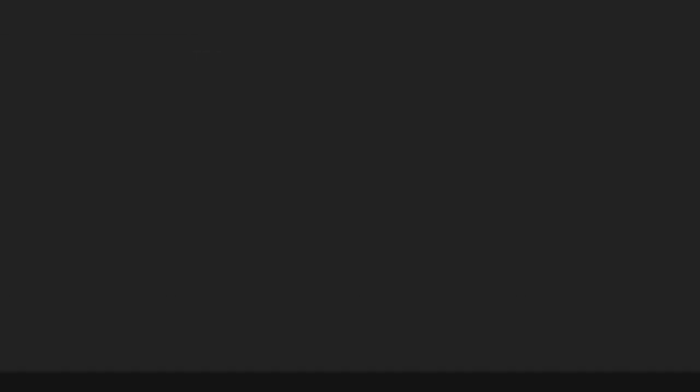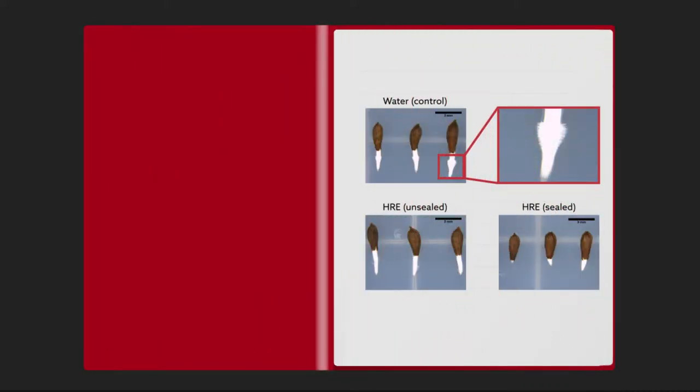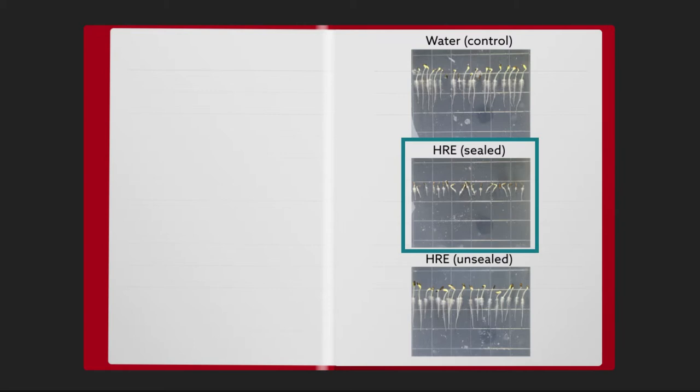Students build on this concept in the laboratory activity. The activity involves germinating lettuce seeds in petri dishes under three conditions: with water, with horseradish extract in an unsealed dish, and with horseradish extract in a sealed dish. Because AITC is volatile, the sealed condition generates the highest local concentrations of the chemical.